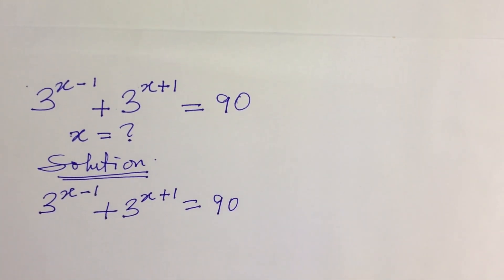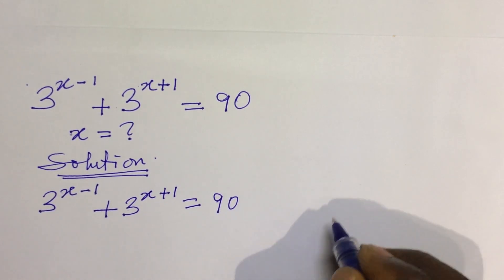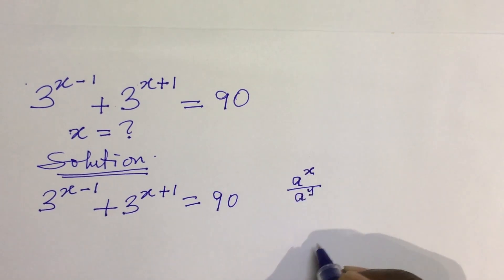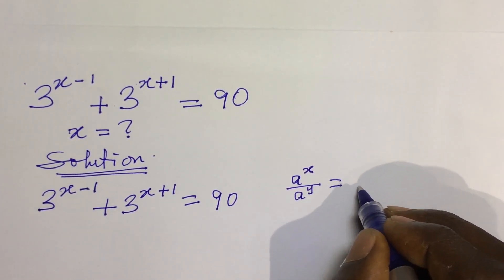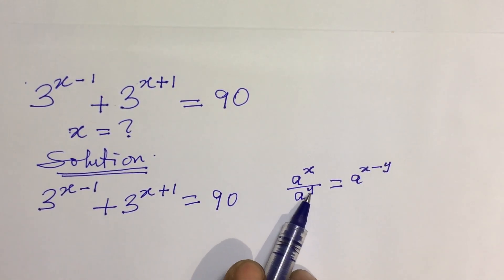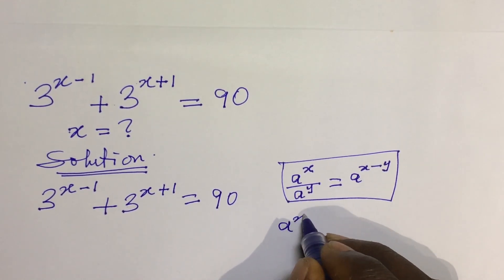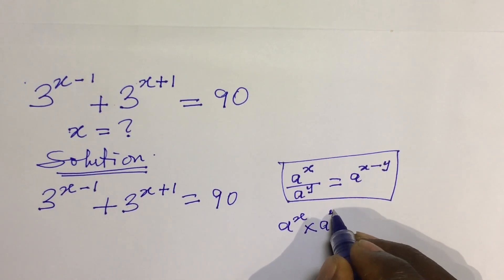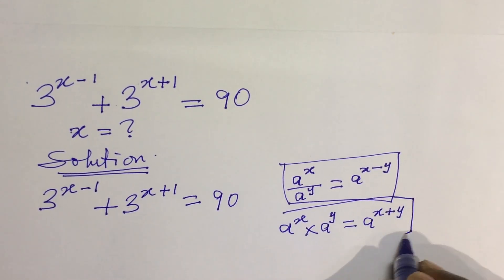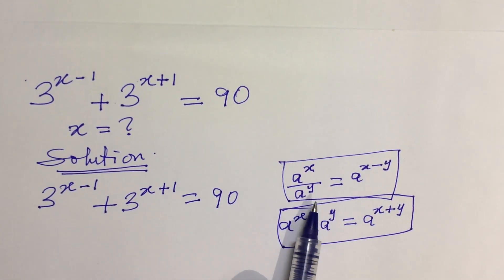From here we can rewrite the whole expression according to the law of indices, which says that if you have a to the power of x divided by a to the power of y, this is the same as a to the power of x minus y, because the base numbers are the same so we subtract the exponents. At the same time, if we have a to the power of x times a to the power of y, this equals a to the power of x plus y. This is the multiplication law of indices, and that is the division law of indices.